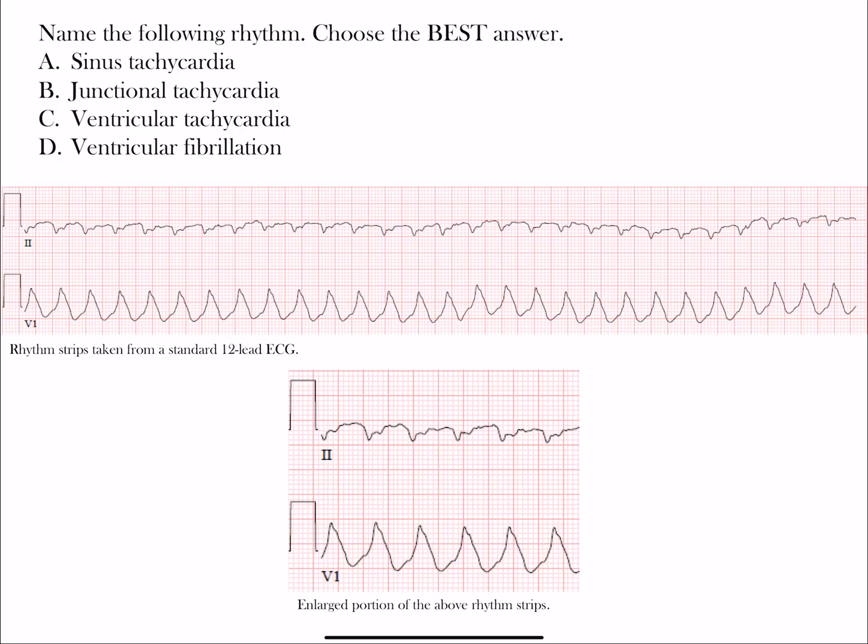Welcome to our next rhythm challenge. Here we have a rhythm - name the following rhythm and choose the best answer. We have four answer choices: A) Sinus tachycardia, B) Junctional tachycardia, C) Ventricular tachycardia, or D) Ventricular fibrillation. Four different choices and we have two different rhythm strips we're looking at here.